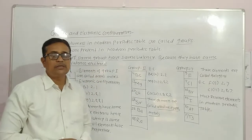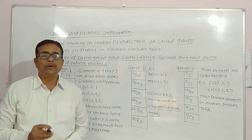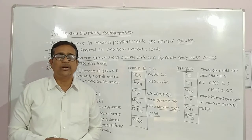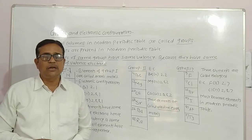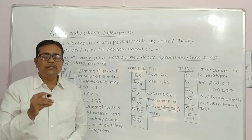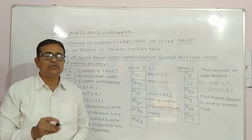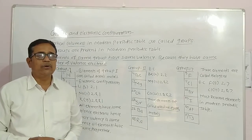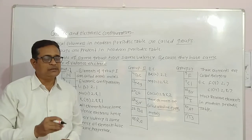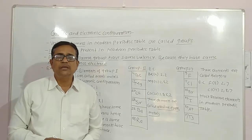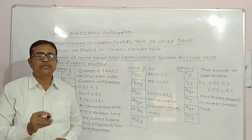Valence electrons are the electrons present in the outermost orbit of the atom. Elements present in the same group have the same number of valence electrons — same number of electrons in their outermost orbit. Hence their valency is the same, and due to same valency, elements of the same group have same chemical properties.